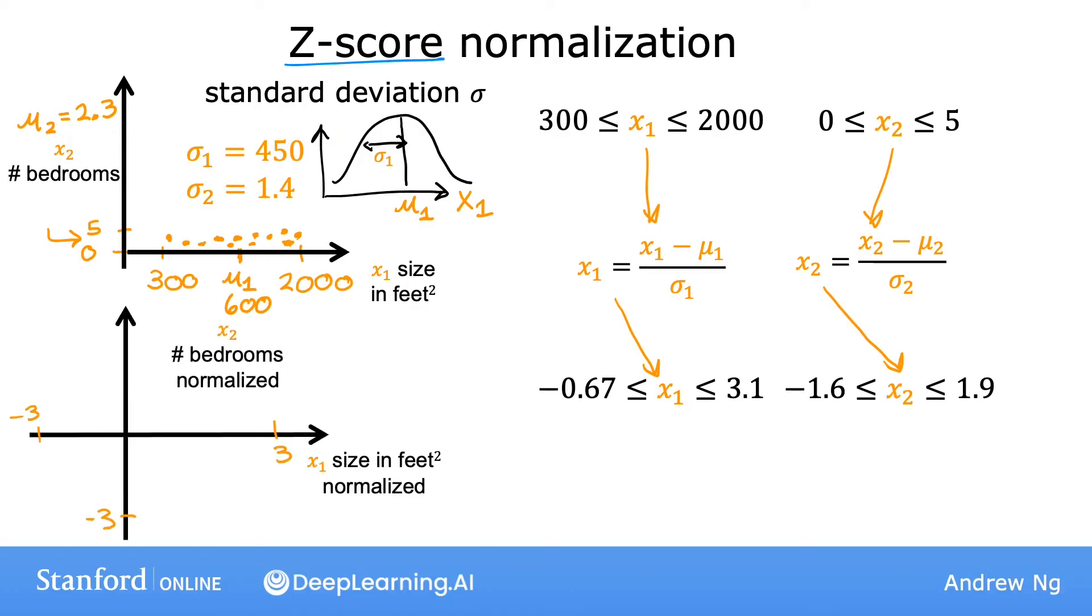So if you plot the training data on the normalized x1 and x2 on a graph, it might look like this.